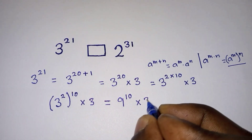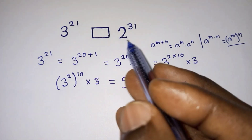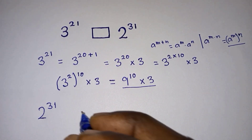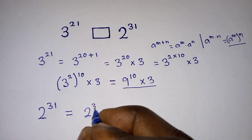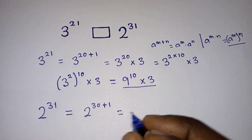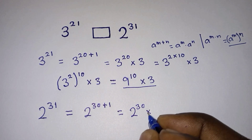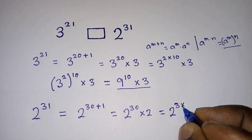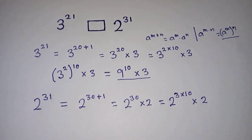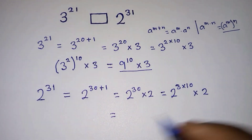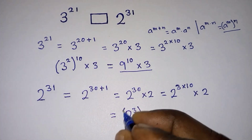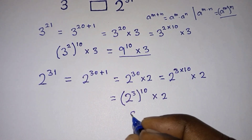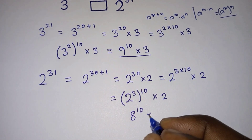Now let's look at the second value: two to the power 31. We are going through the same procedures. We write this as two to the power 30 plus one, and we can write this as two to the power 30 times two, based on the first rule. This is the same as two to the power three times ten, then times two. From here, we can write this as two to the power three, to the power 10, then times two. Two to the power three is eight, so we get eight to the power 10 times two.